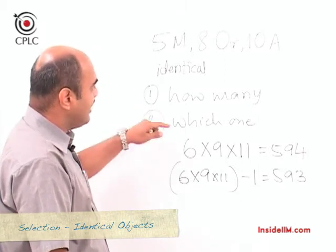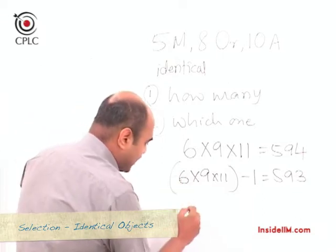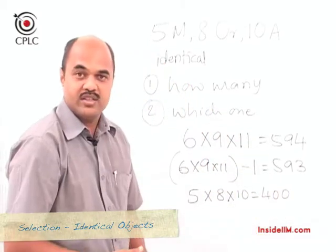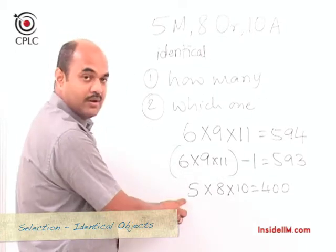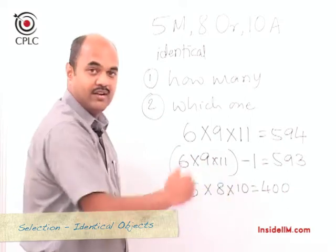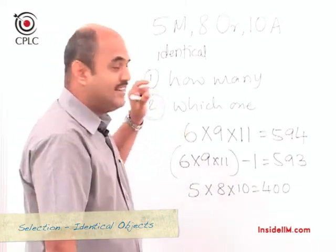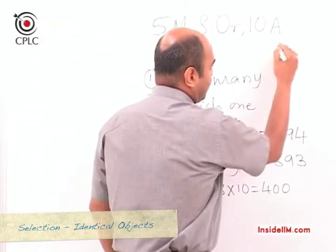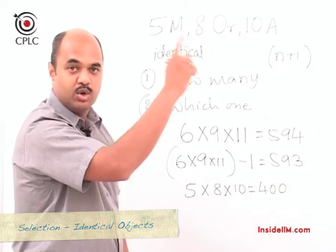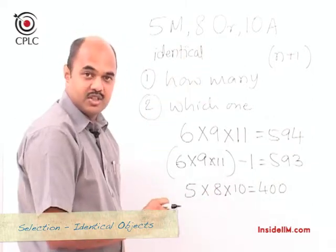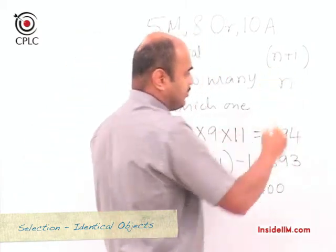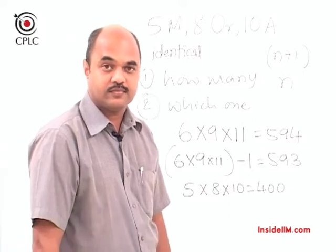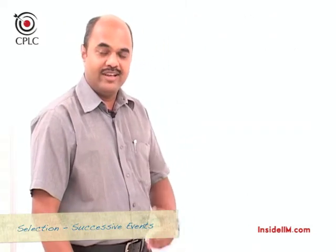For at least one fruit of each type, the calculation is 5 × 8 × 10 = 400 ways, ensuring at least 1 mango, 1 orange, and 1 apple is selected. So for identical objects, the general formula for selecting from n objects is (n + 1) ways, since you can choose 0 to n. For at least one object, the formula is n ways. These formulae only apply when the given objects are identical.